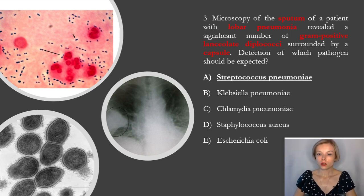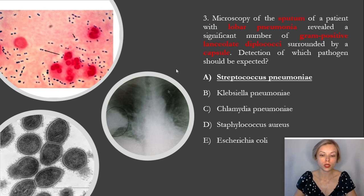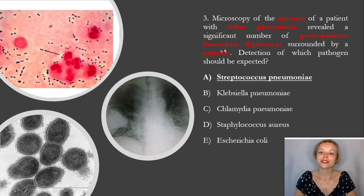Test number three. Microscopy of the sputum of a patient with lobar pneumonia revealed a significant number of gram-positive lancet-shaped diplococci surrounded by a capsule. Detection of which pathogen should be expected? The correct answer is A, Streptococcus pneumoniae. In the photo you can see lobar pneumonia on an X-ray. This pneumonia is caused by Streptococcus pneumoniae. Microscopy of sputum from the patient showed lancet-shaped diplococci.